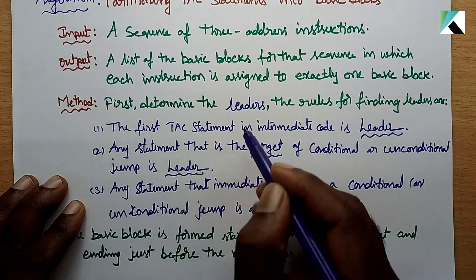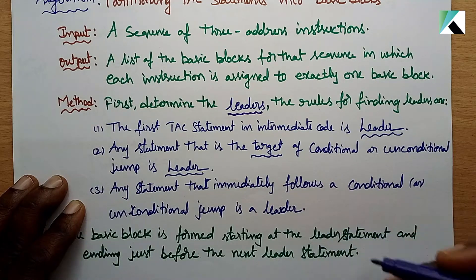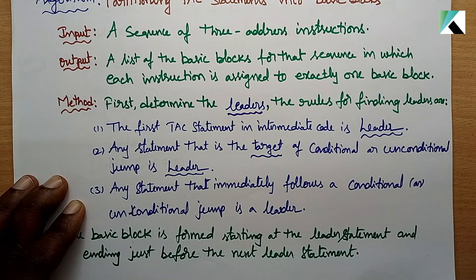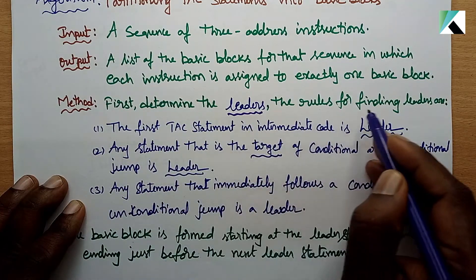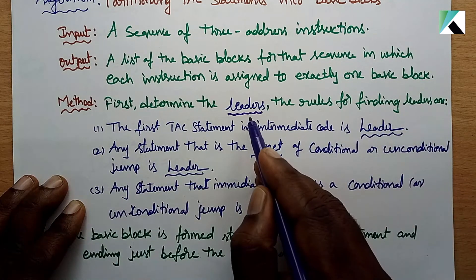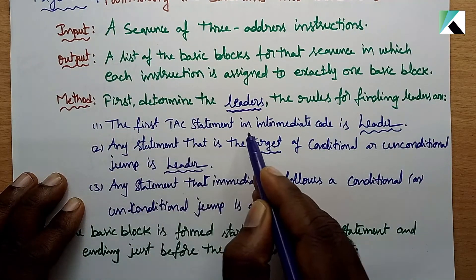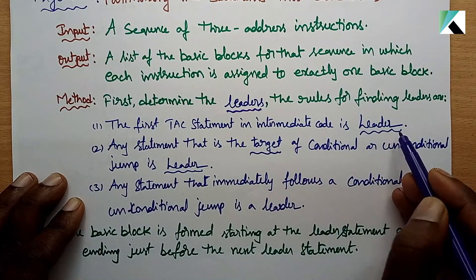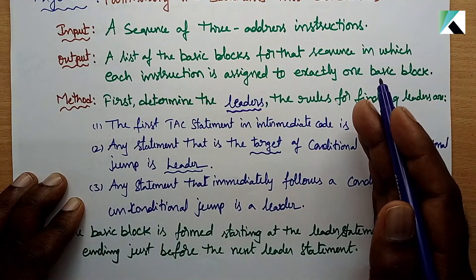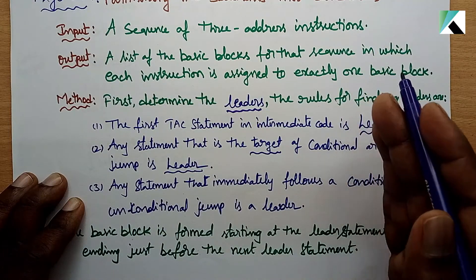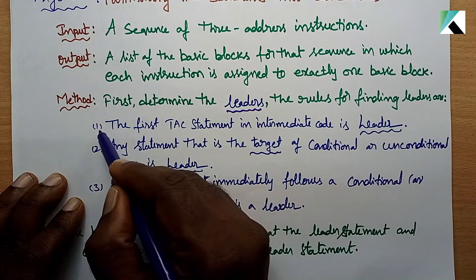First, we determine the Leaders. There are rules for finding leaders. Rule one: the first TAC statement in the intermediate code is always a leader.